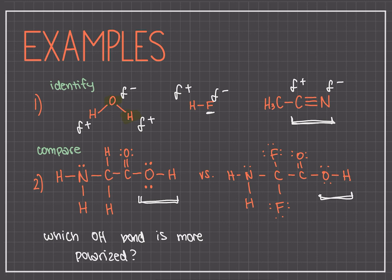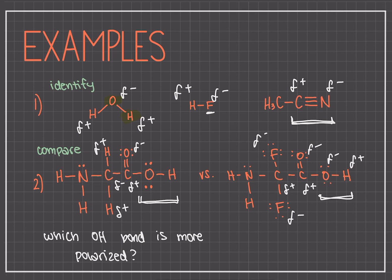Now, thinking about the OH bond — we know oxygen is going to have a partial negative and hydrogen is going to have a partial positive. But on the left molecule, one carbon has a partial negative and one has a partial positive, so there will be a less polarizing effect on the oxygen. On the right molecule, both carbons are partial positive, so that oxygen in the center is pulling electrons from all directions more than in the left molecule. This is called the inductive effect — where an atom is completely surrounded by partial positive energy, making it even more polarized. So it's actually the right molecule where the OH bond is more polarized, because the fluorines are making it so.